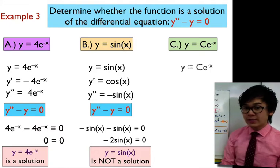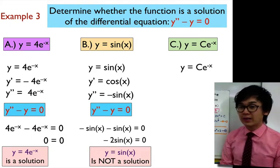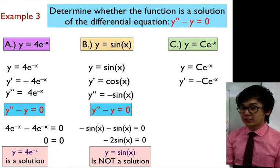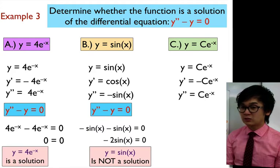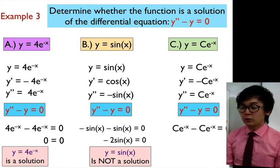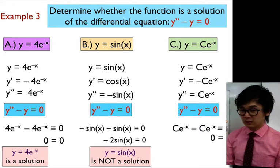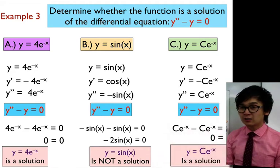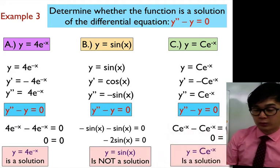For the third function, y = ce^(-x), the first derivative is negative ce^(-x) and the second derivative is ce^(-x). Substituting into the differential equation: ce^(-x) minus ce^(-x) equals 0. Therefore, y = ce^(-x) is indeed a solution to the differential equation y double prime minus y = 0.